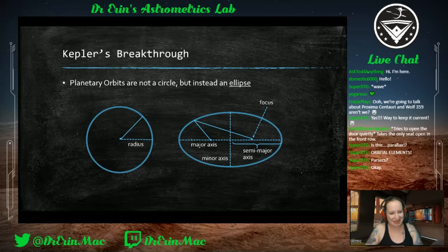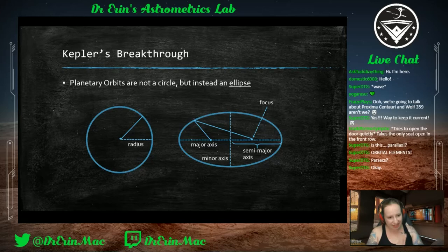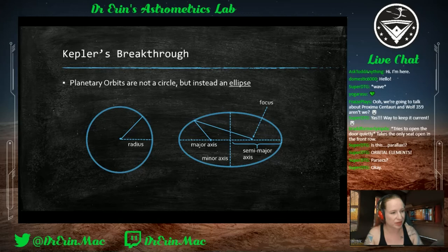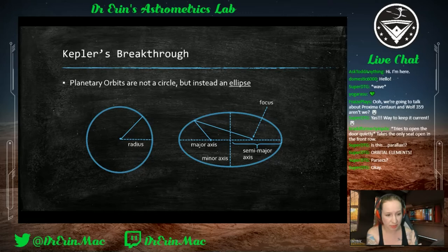Copernicus used a heliocentric model but it still wasn't good and wasn't being adopted, mostly because they assumed orbits were perfect circles. Johannes Kepler, Tycho Brahe's student, made the breakthrough just by asking: what if they're not perfect circles? What if we let go of the concept that the heavens are perfect and assume the orbits are not circular? That fixed everything.